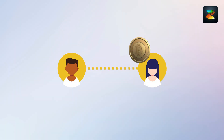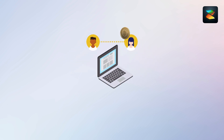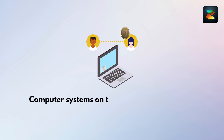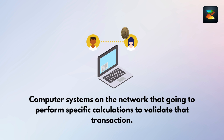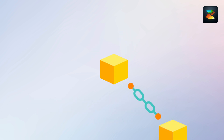Let's say I do a Bitcoin transaction. That transaction gets added to something called the mempool. Then validators — which are computer systems on the network that perform specific calculations to validate that transaction — once that transaction is validated and agreed upon by the validators, it gets added into the blockchain in a specific block. Then the whole blockchain gets distributed once again to all the computer systems on the network, and that marks the completion of a transaction.